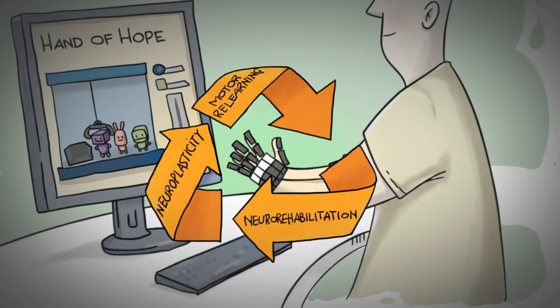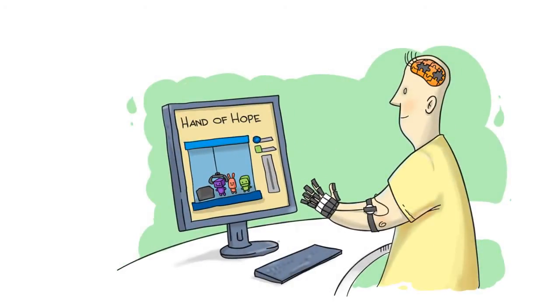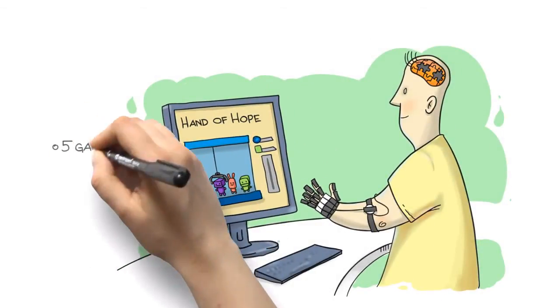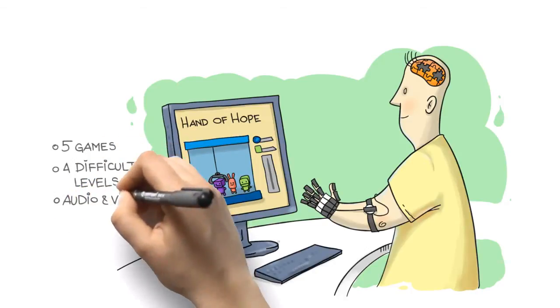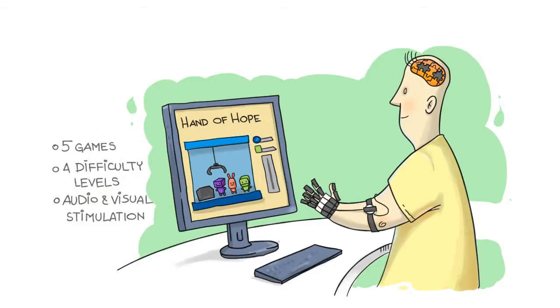The system offers five different games with four difficulty levels, as well as audio and visual stimulation. The device can be moved by the will of a user to complete tasks. Users need to actively use their brain, thus training it and relearning motor skills.